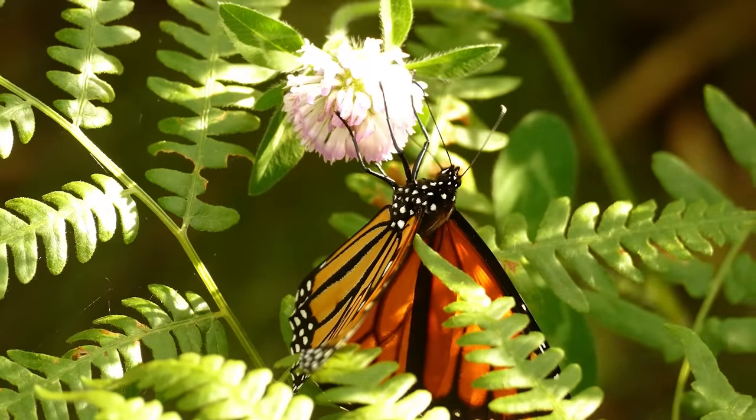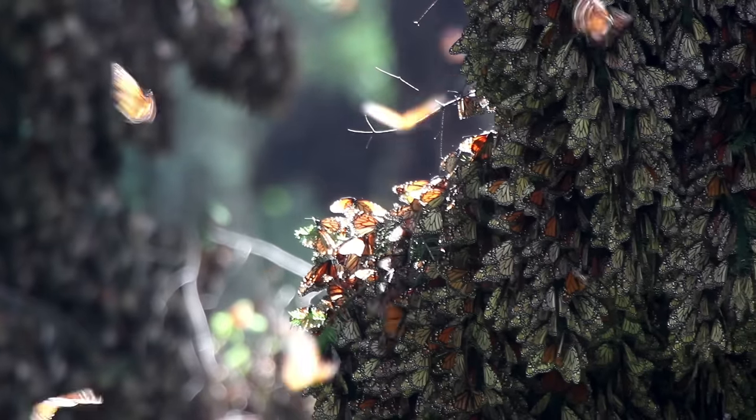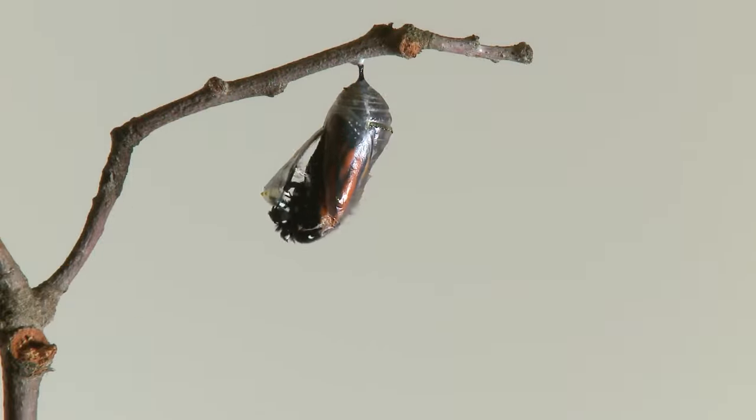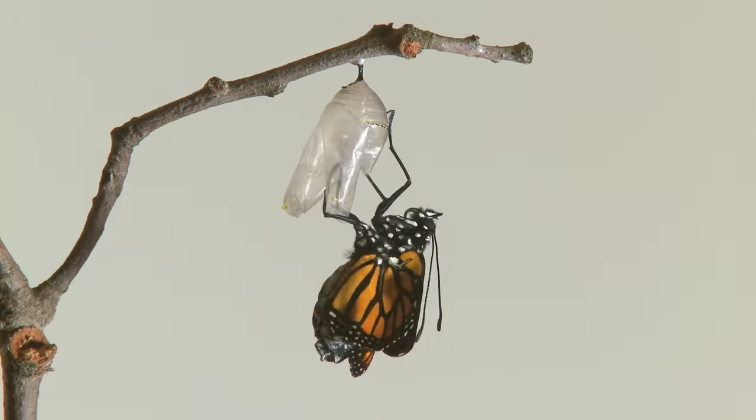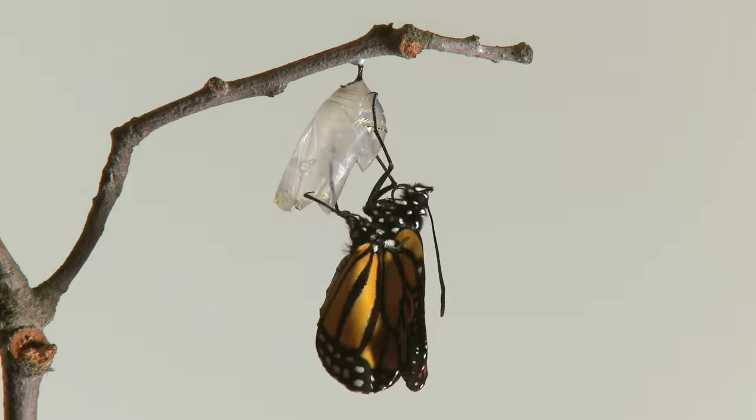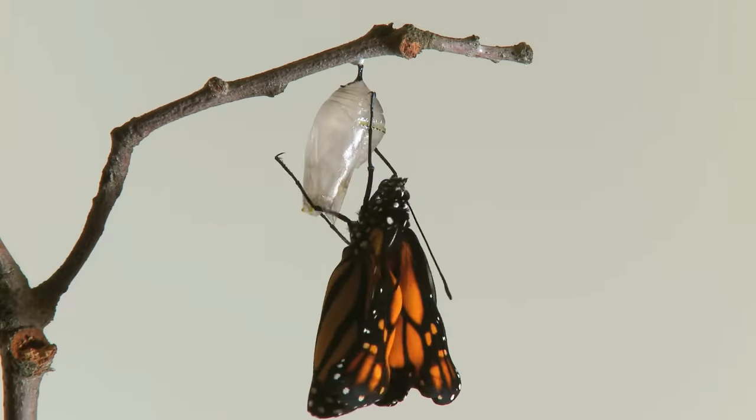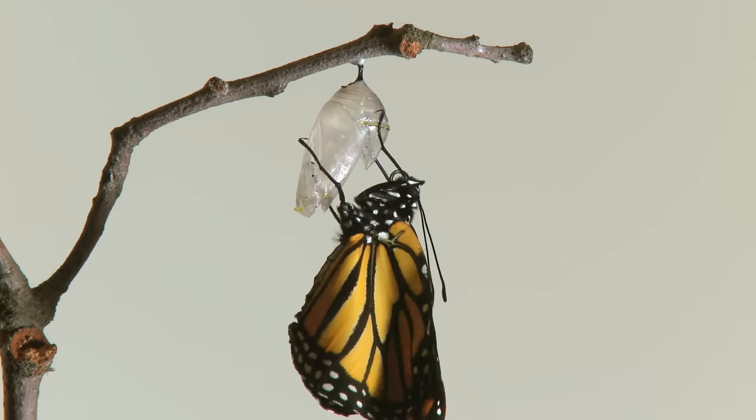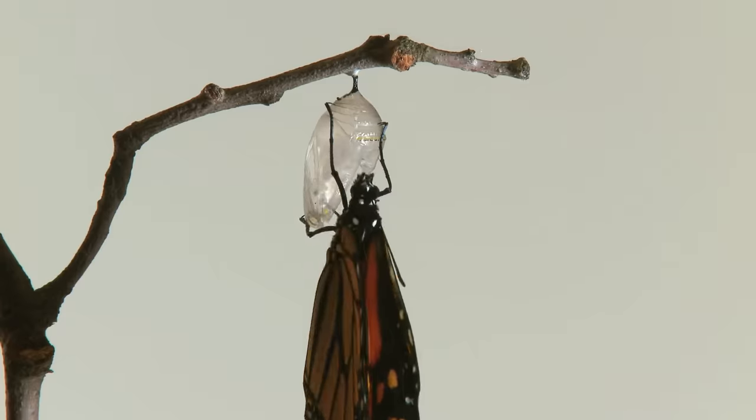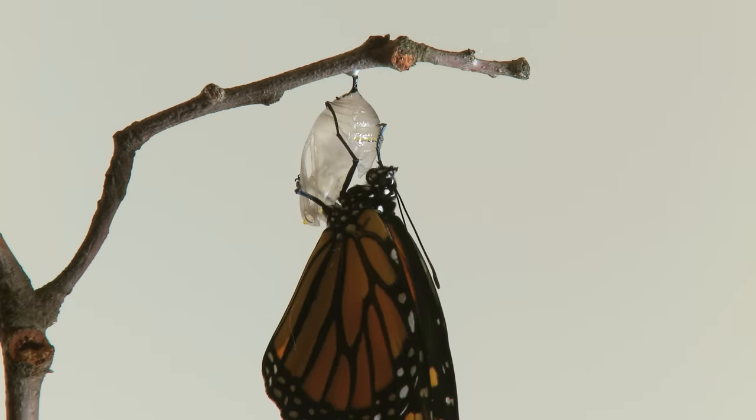This epic journey is completed over three to five generations, meaning female butterflies lay their eggs along the way then die, and their offspring continue the journey. Sometimes it is the great great great grandbutterfly of the original that arrives in Mexico shortly before winter. While there have been suggestions that they use the Earth's magnetic fields as a compass, we have no idea how these butterflies know instinctively where to go shortly after bursting from their cocoon.